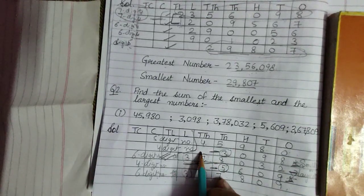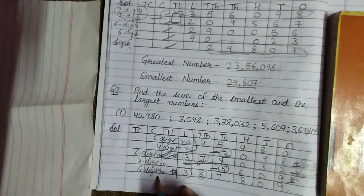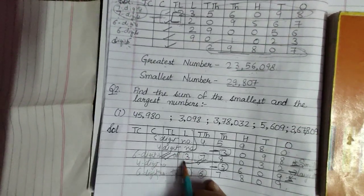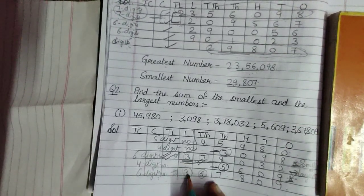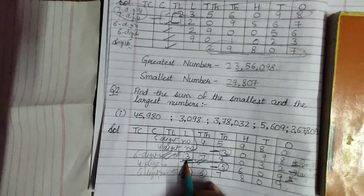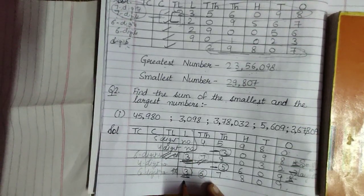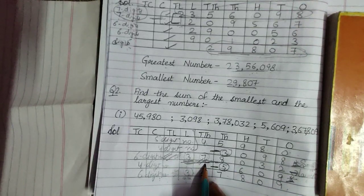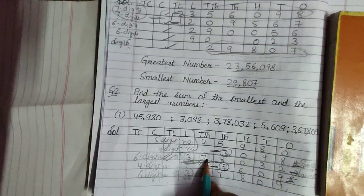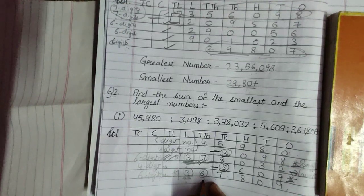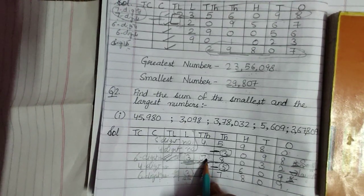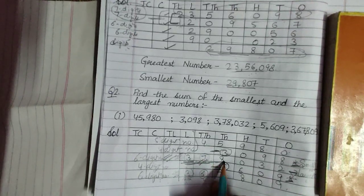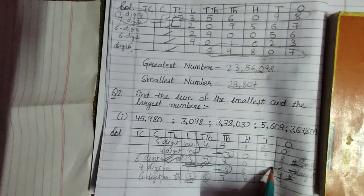To find the largest number, we look at the numbers with 6 digits each and compare from the left. In the lakh column, both have 3, so we move to the 10,000 column. The third number has 7 and the last number has 6. Since 7 is greater than 6, 3,07,8032 is our largest number.